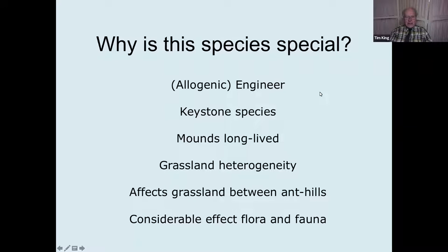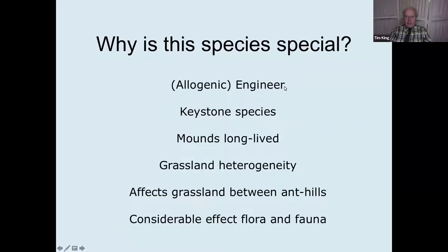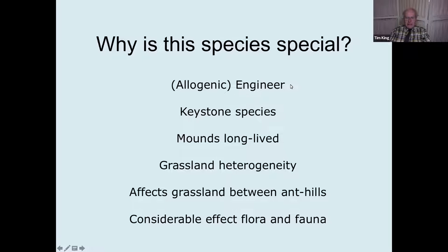Why is this species special? This is the yellow meadow ant, the main species in Britain and Northern Europe which builds anthills. There are 55 species of British ants roughly, and it's probably the most wide-ranging and important. It's an allogenic engineer — a species which builds structures used by a large number of animal and plant species. The most obvious examples in the northern hemisphere are the yellow meadow ant and beavers, and beyond the northern hemisphere, corals forming coral reefs and termite mounds. These affect the distribution pattern of many other species.